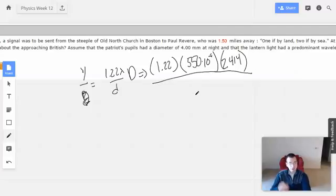Over distance between the two, which is what we're looking for. Wait a second, no. There we go. This is supposed to be the pupil, 4 times 10 to the negative 3rd. There we go.